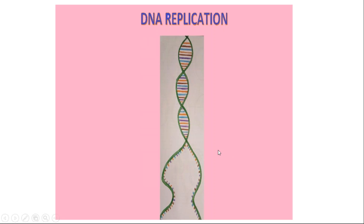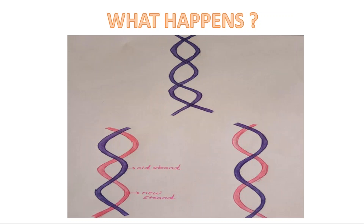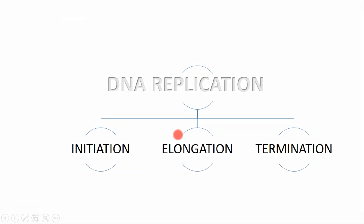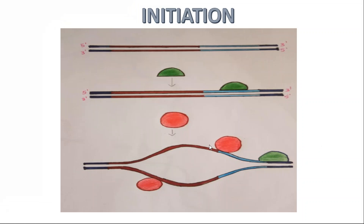Hello friends, let's discuss DNA replication. DNA replication is a process in which two identical molecules of DNA are produced from one single molecule of DNA. This process of DNA replication is divided into three stages: initiation, elongation, and termination.